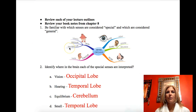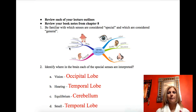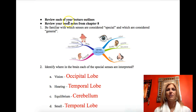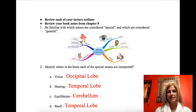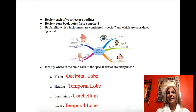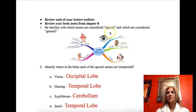First of all, we're comparing general and special senses. General senses are found all throughout your body: temperature, touch, proprioception. Special senses are localized to specific areas: taste, vision, sound, balance, and smelling.